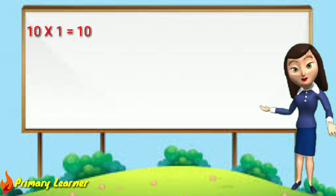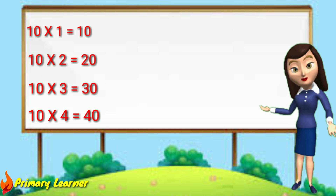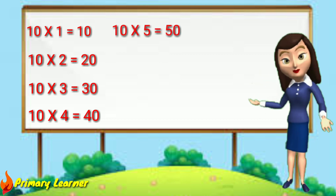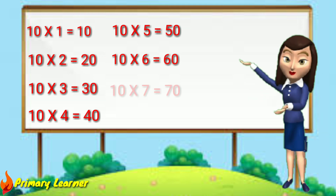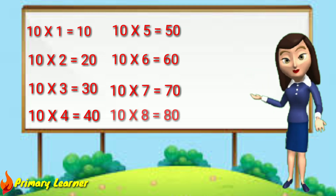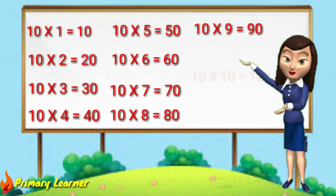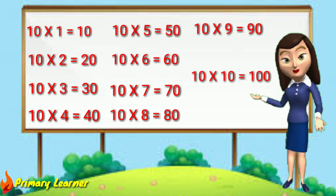10 ones are 10, 10 twos are 20, 10 threes are 30, 10 fours are 40, 10 fives are 50, 10 sixes are 60, 10 sevens are 70, 10 eights are 80, 10 nines are 90, 10 tens are 100.